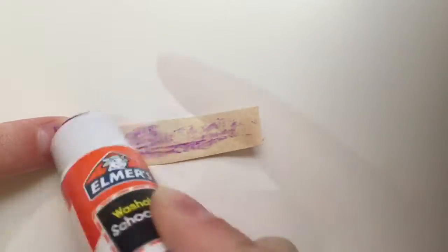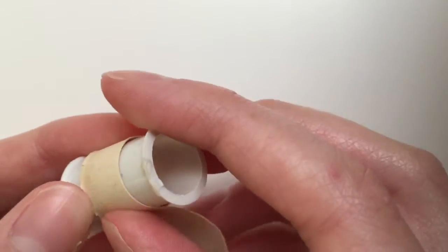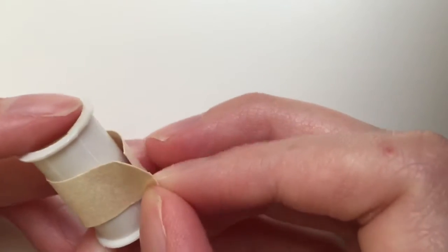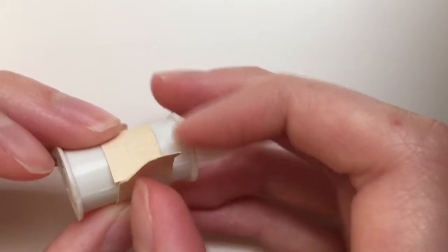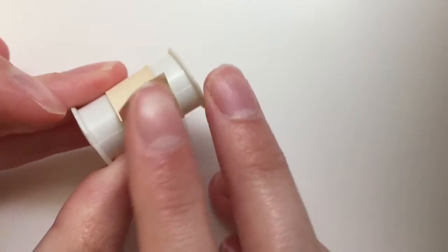So start by gluing the strip of paper and securing it as you wrap it around the spool of thread. Continue to press it down, that way it will not fall off.